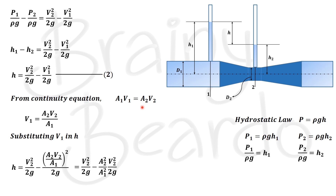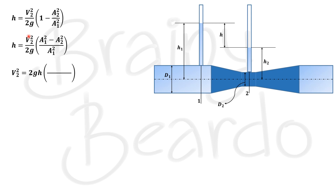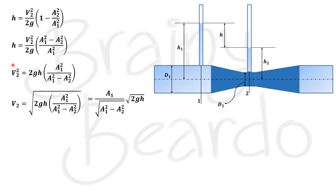Factoring out v2²/2g gives h = (v2²/2g)·(1 − a2²/a1²) = (v2²/2g)·(a1² − a2²)/a1². Rearranging to isolate v2: v2² = 2gh·a1²/(a1² − a2²). Taking the square root: v2 = a1/√(a1² − a2²) · √(2gh). This is the expression for v2.